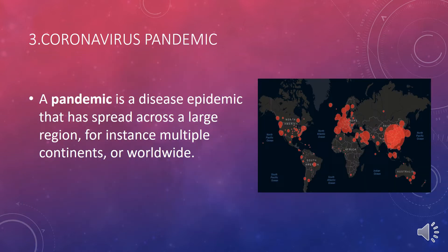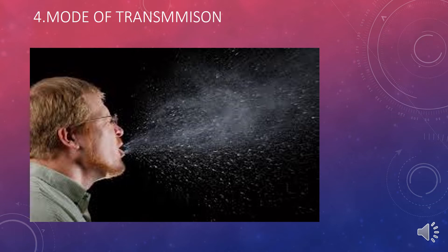A pandemic is a disease epidemic that has spread across a large region, for instance multiple continents or worldwide. This picture shows one of the initial reports of coronavirus spread. For the current picture, I will give a link in the description below — a site which provides total cases, total deaths, active patients, and all data about coronavirus patients.